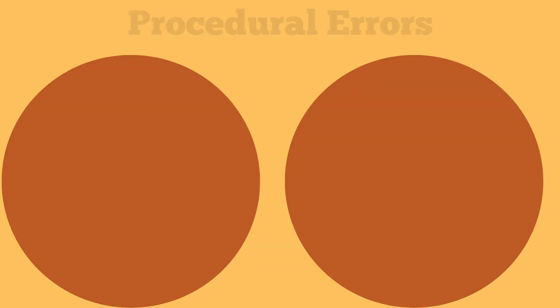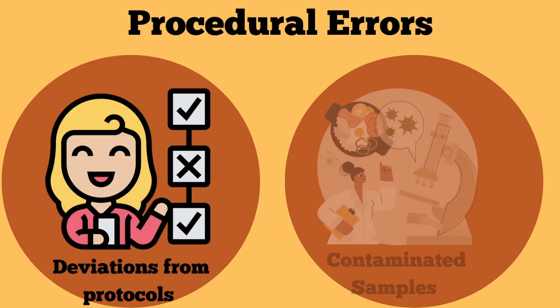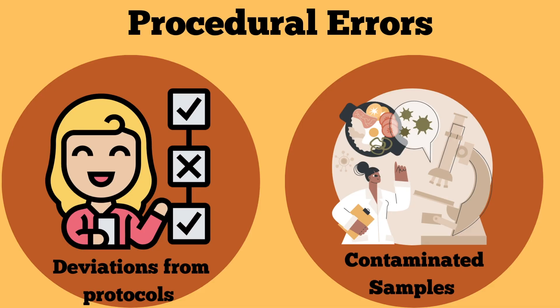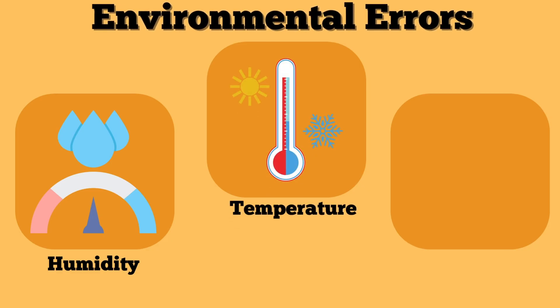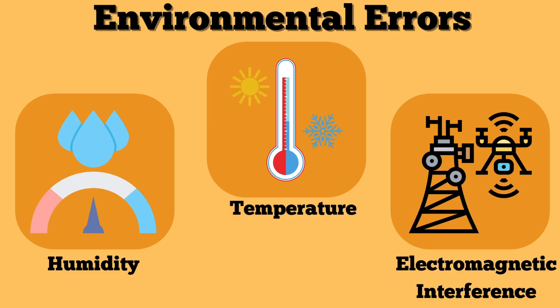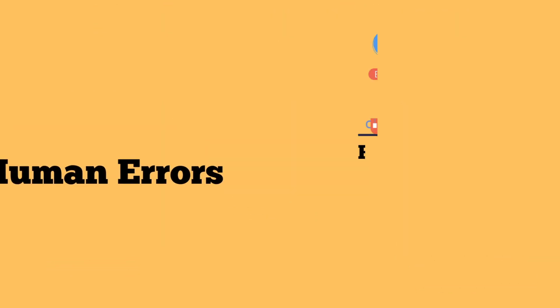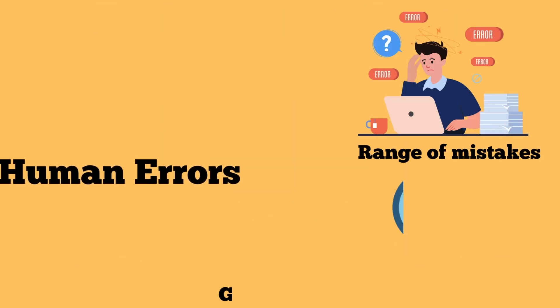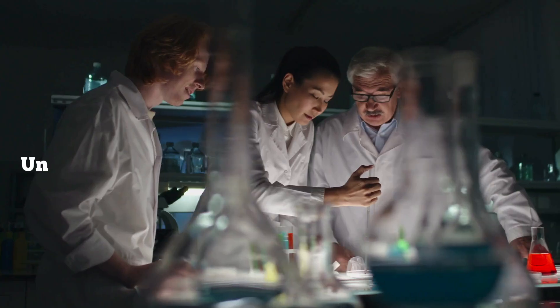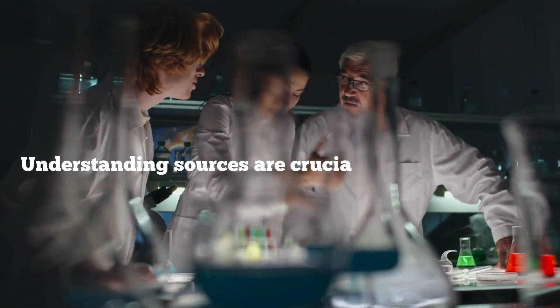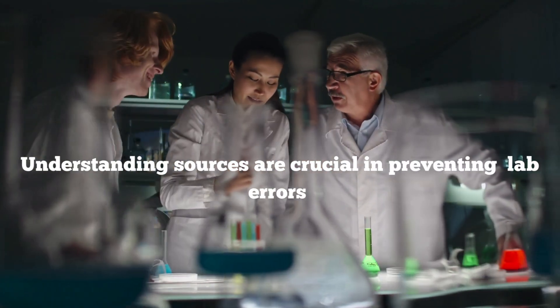Procedural errors are another common source where deviations from established protocols or contamination of samples can significantly affect results. Environmental errors, influenced by factors such as temperature, humidity, or electromagnetic interference, can unpredictably alter experimental conditions. Human errors, often overlooked, encompass a range of mistakes from miscalculations to misinterpretations all the way to general oversight during experiments. Understanding and identifying these sources are crucial steps in preventing and mitigating lab errors.